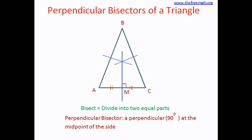You can see that all these perpendicular bisectors meet at a single point. They always meet at a single point. This point is called the circumcenter of the triangle. The circumcenter is the point where all the perpendicular bisectors of the triangle sides meet.